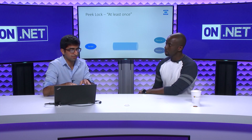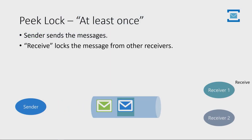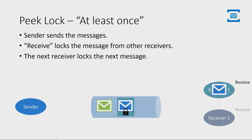We're looking at the queue example here, but it works the same way for subscriptions as well. The way it works is that the sender sends the message, the receiver will then lock the message when it calls receive. It says, "This is my message, I'm going to lock it — don't expose it to any other receiver." The next receiver that calls receive will then lock the next message, assuming both have the peek lock receive mode set.